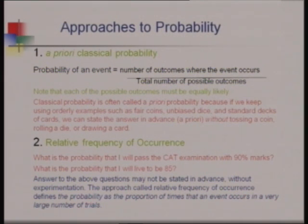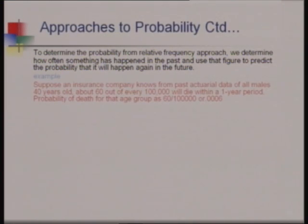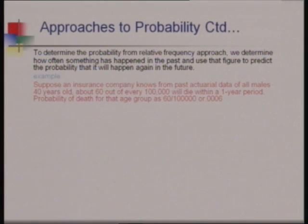The relative frequency approach is not stated in advance like the classical approach — you need to do an experiment to determine the probability by seeing how often an event has occurred. For example, if you appear in 10 mock tests and fail in 4, passing 6 times, you predict a 60% chance of passing the CAT examination. Another example: an insurance company knows from past data that about 60 out of every 1 lakh males aged 40 will die, giving a probability of 0.0006.